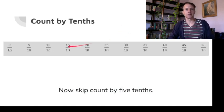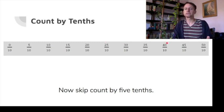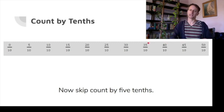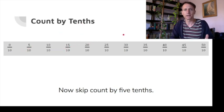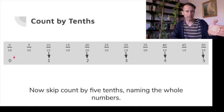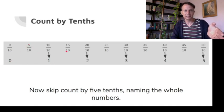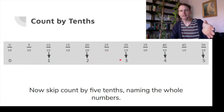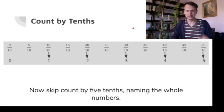Skip-counting from zero tenths by fives: five tenths, ten tenths, fifteen tenths — now we're into improper fraction territory — twenty tenths, twenty-five tenths, thirty tenths, thirty-five tenths, forty tenths, forty-five tenths, fifty tenths. Notice that ten tenths, twenty tenths, and zero tenths all have whole number equivalents. Skipping by five tenths but saying the whole numbers: zero, five tenths, one, fifteen tenths, two, twenty-five tenths, three, thirty-five tenths, four, forty-five tenths, five. So thirty tenths equals three.